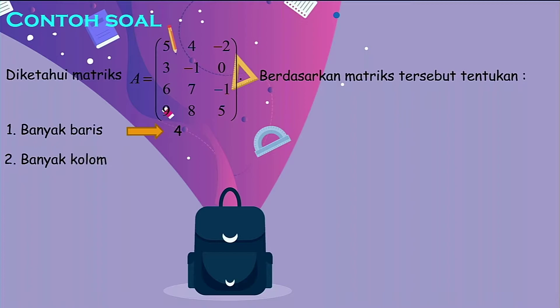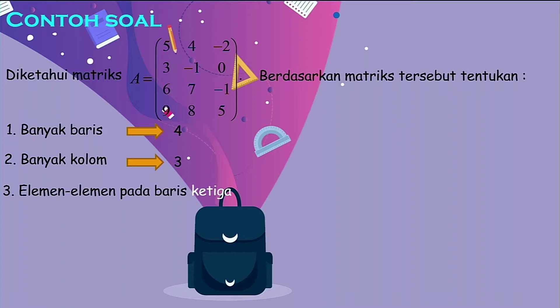Soal berikutnya, banyaknya kolom — kolom itu berarti vertikal, berarti 1, 2, 3. Maka banyak kolom ada 3. Soal berikutnya, elemen-elemen pada baris ketiga — artinya angka-angka yang terletak pada baris ketiga. Baris pertama, baris kedua, baris ketiga. Berarti elemen-elemen pada baris ketiga itu angkanya adalah 6, 7, dan negatif 1.